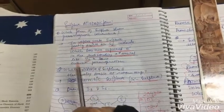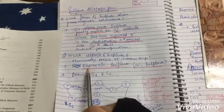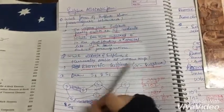Which allotrop of sulfur is thermally stable at room temperature? Rhombic sulfur that is alpha sulfur.